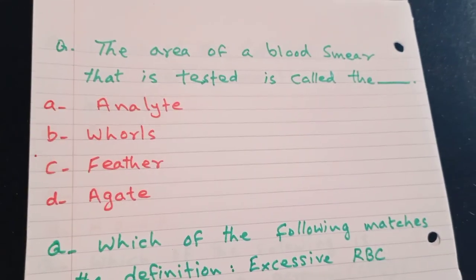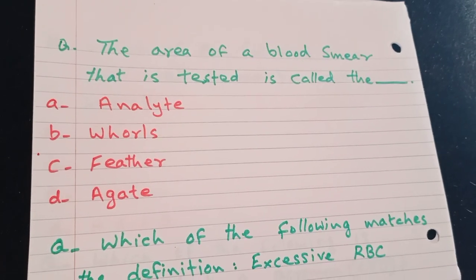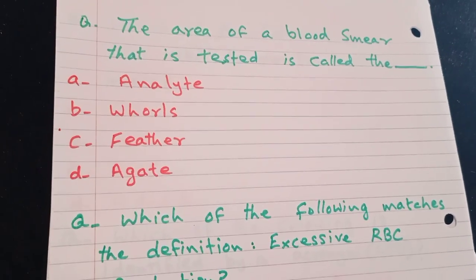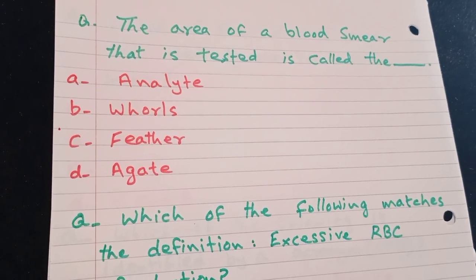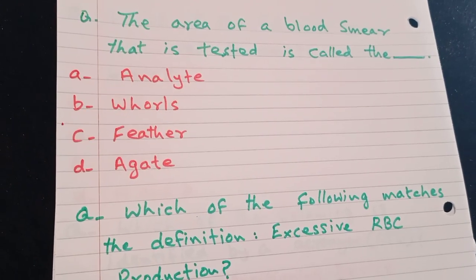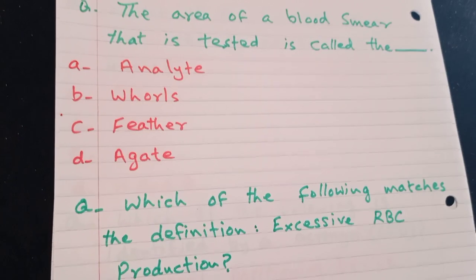The area of a blood smear that is tested is called the analyte, whorls, feather, agate. The answer is C, feather.